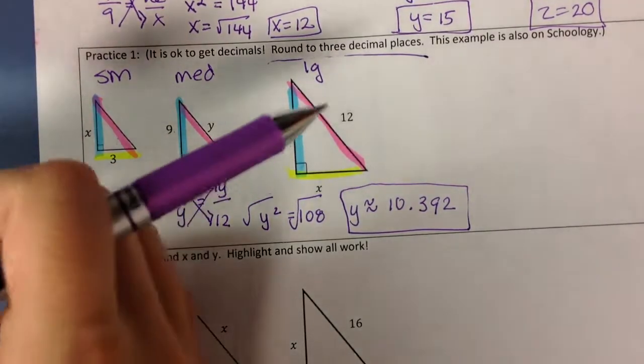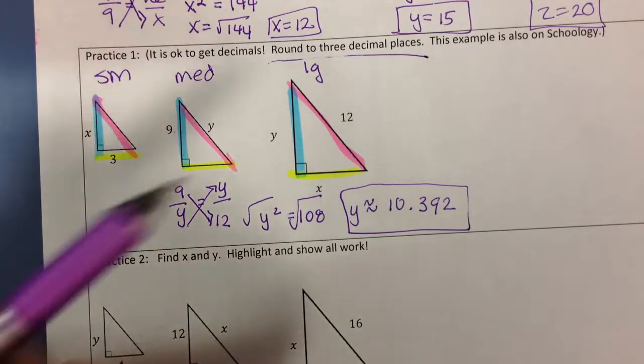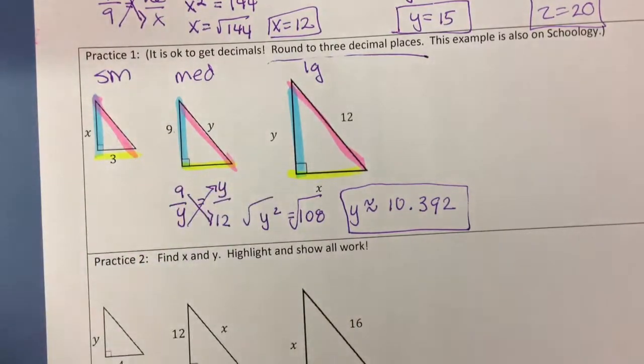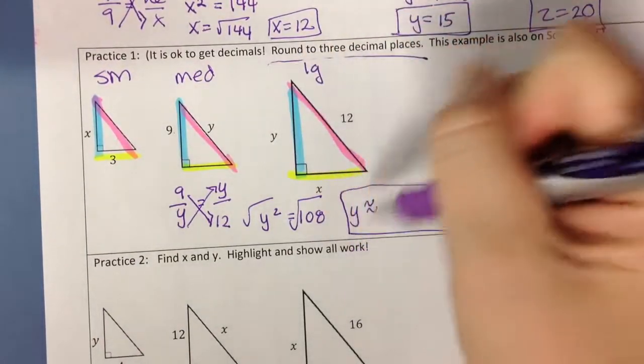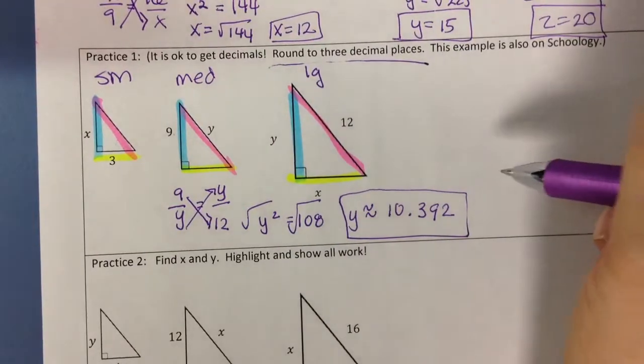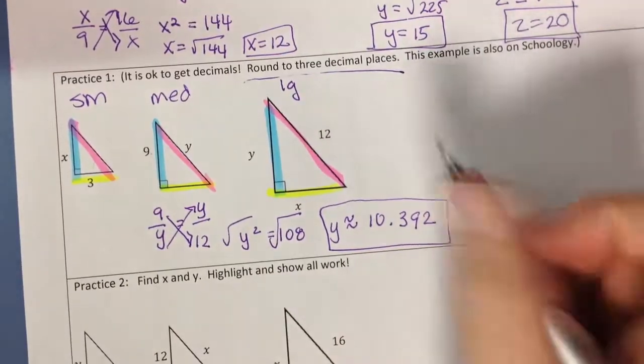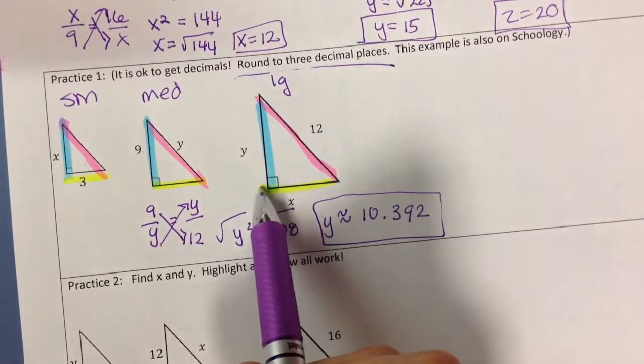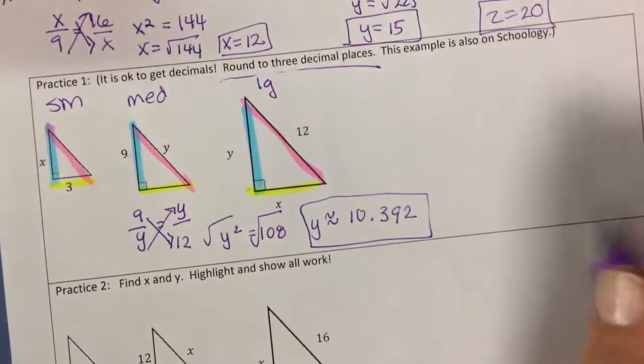Alright, so let's say that we now use the Pythagorean theorem to find our value of x that's over here. So if we use the Pythagorean theorem to find x, we are going to not want to use this rounded number because that's going to cause us to make a mistake. So if I think about it, my Pythagorean theorem tells me my short leg squared plus my long leg squared equals my hypotenuse squared.